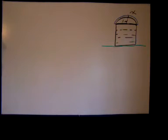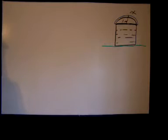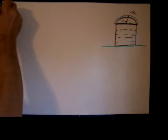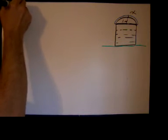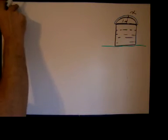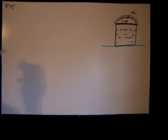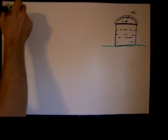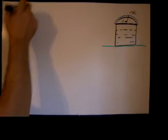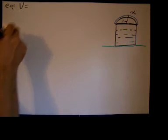If the diameter of the hemisphere was 2 meters, the radius of the hemisphere is 1 meter. That's constant, so I didn't label it with a variable. We do need an equation, and our equation is going to be based on the volume of a hemisphere. The volume of a hemisphere is half the volume of a sphere.